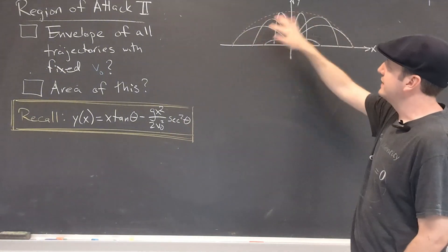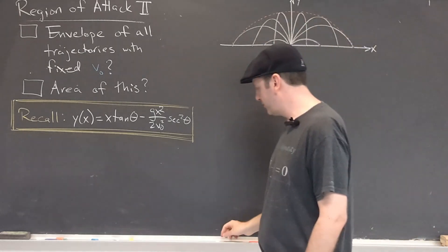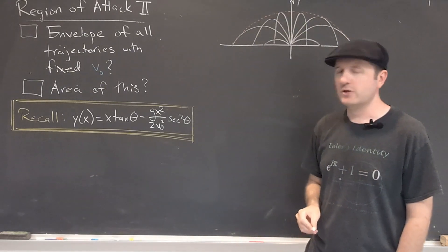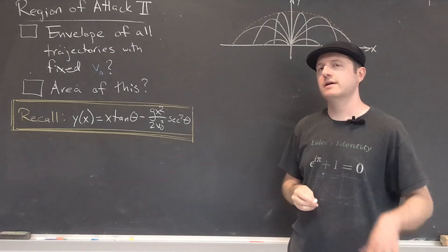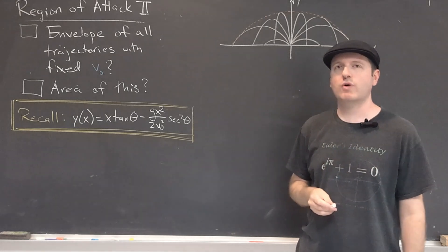Remember that theta here is the launch angle, V naught is the launch speed, we have our usual G. And this Y is just telling us the height of the projectile as a function of position. Okay, so let's take a look at this. To determine this envelope, I'm going to actually use a little bit of polynomial information, thinking about discriminants of a certain quadratic.